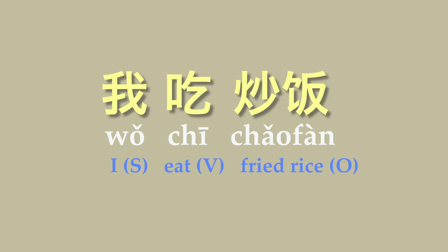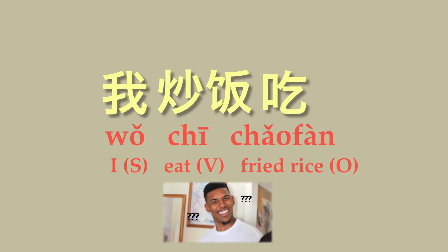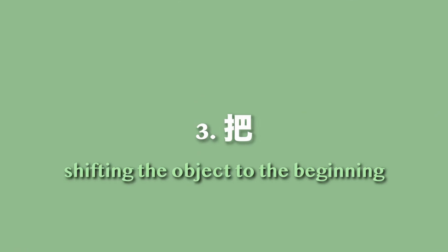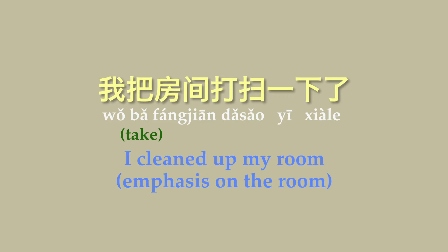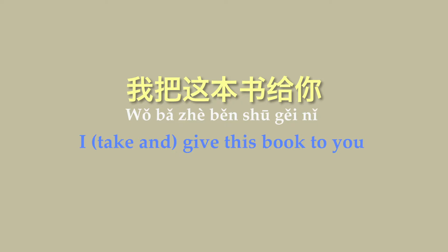Next, let's talk about the 把 structure, which is feared all over the world. We know that Chinese generally follows subject-verb-object structure, but 把 shifts the object to the beginning of the sentence to emphasize something. It's like instead of saying 'I cleaned up my room,' you say 'My room, I cleaned up.' So: 我把房间打扫一下了. A helpful way to remember: imagine 把 means 'to take.' So I took my room and cleaned it up. Another example: 我把这本书给你 — I take this book and give it to you.